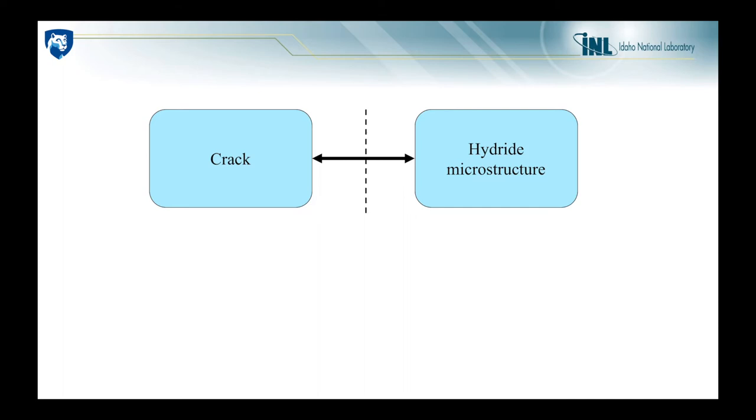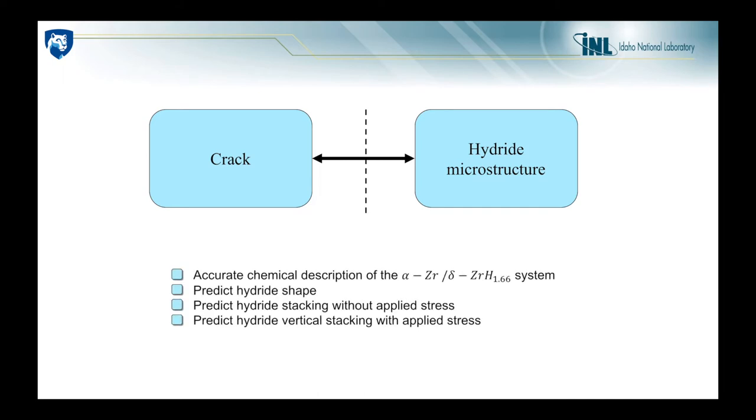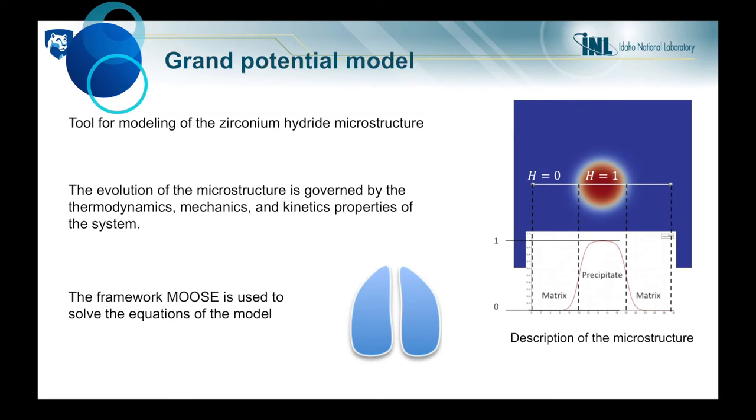My work is to develop the hydride microstructure model, so my aims are to obtain an accurate chemical description of the alpha zirconium and delta hydride system, to predict hydride shape, to predict the circumferential stacking of the hydrides without applied stress, and to predict the radial hydride stacking with applied stress. To do this, I use the grand potential model, which is a tool for microstructure modeling. It allows a simulation of microstructure evolution. An example of microstructure is shown on the right, where we can see a hydride in red and the alpha zirconium in blue. The evolution of this microstructure is governed by the thermodynamics, mechanics and kinetic properties of the system, so it is very important to be able to describe them accurately in the model. The equations that we obtained are then solved using the framework MOOSE developed by INL.